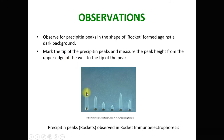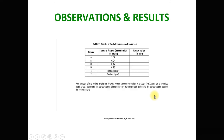The height of the rocket is determined by measuring from the base of the well to the tip of the rocket. In this picture, different heights of the rockets are seen. These heights are noted in tabular form — the heights of the standard antigens are noted and the heights of the test antigens are also noted. Then the graph is plotted.